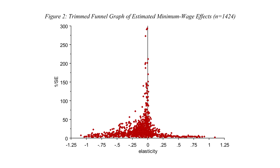They're engaging in the cardinal sin of science: starting with the conclusion and coming up with other reasons why the data don't fit. Think about it this way — I'm sure in pretty much any astrophysics journal you'd open, you'd find all sorts of studies with data showing the Earth to be round, and none at all showing it to be flat. Making this kind of funnel graph would be very lopsided indeed. Are you really going to tell me that this would be evidence of publication bias, and not simply because the Earth is, in fact, round?